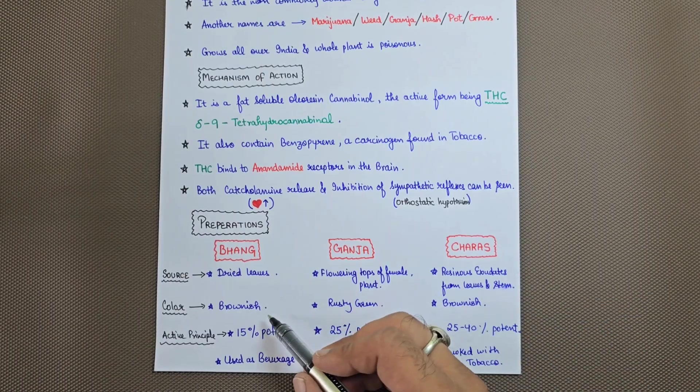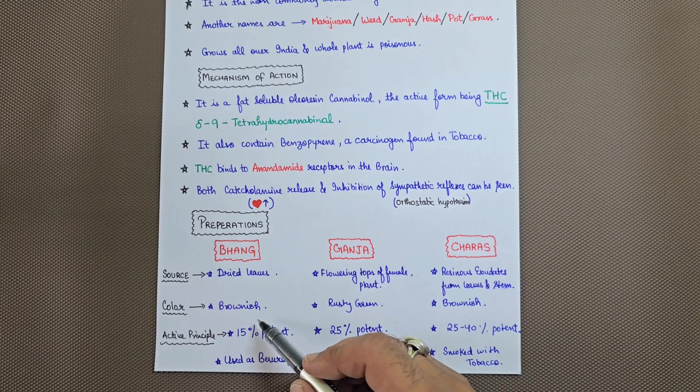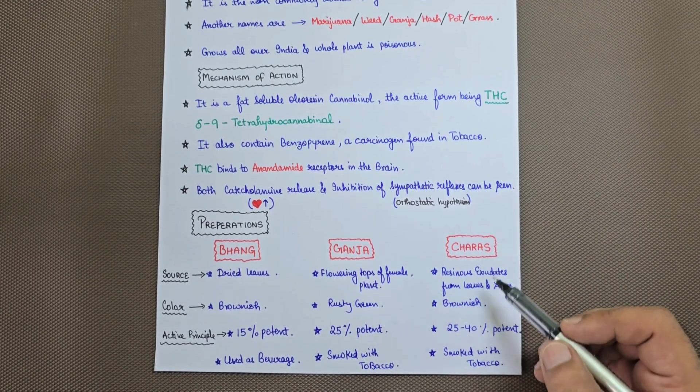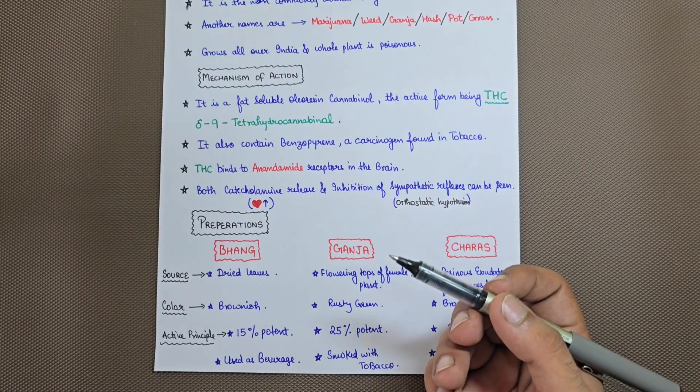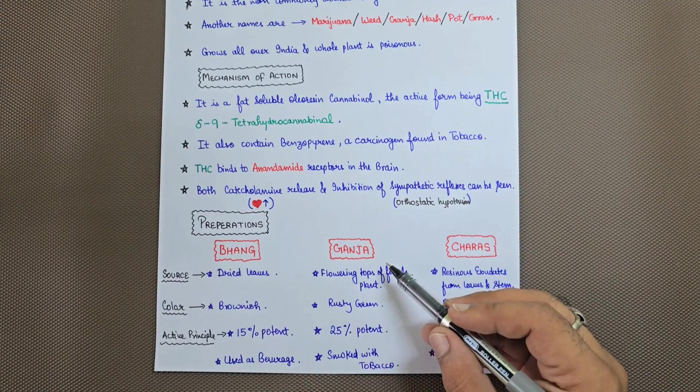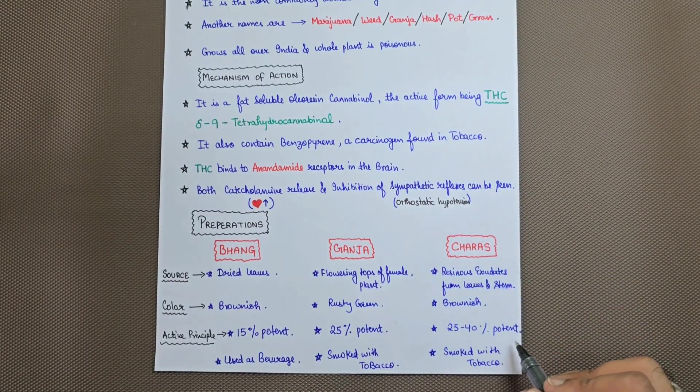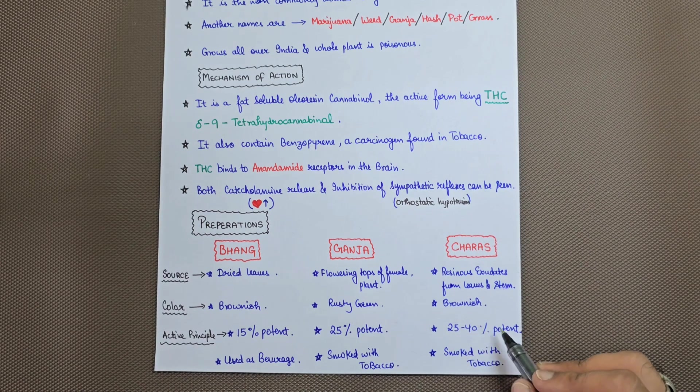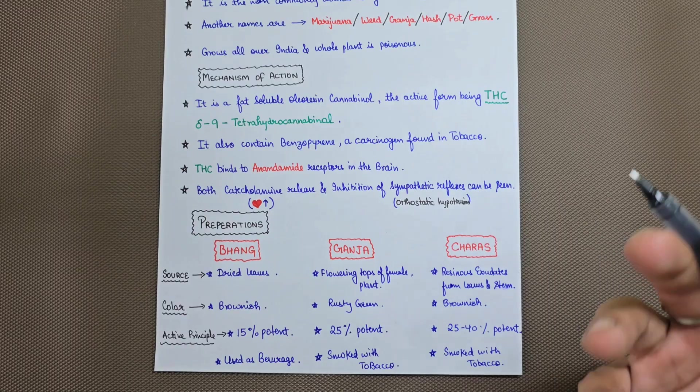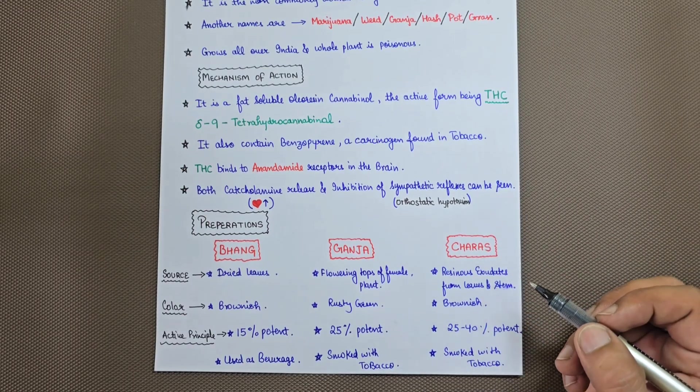What is the particular color of bhang? Bhang is brownish in color, ganja is rusty green, and charas is brownish. Bhang is 15% potent, ganja is 25% potent, while charas is 25 to 40% potent. The maximum psychoactive symptoms will be from the charas component of cannabis.